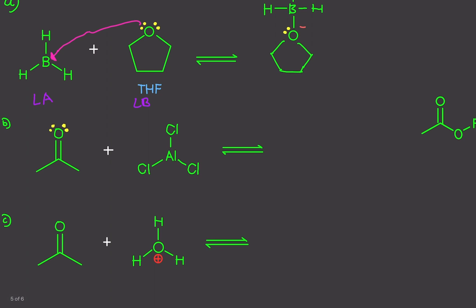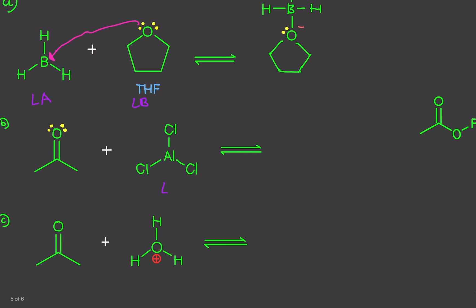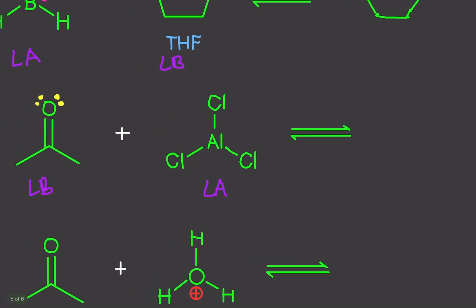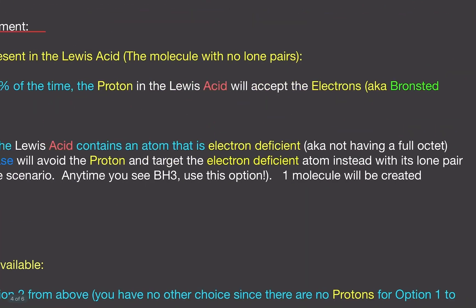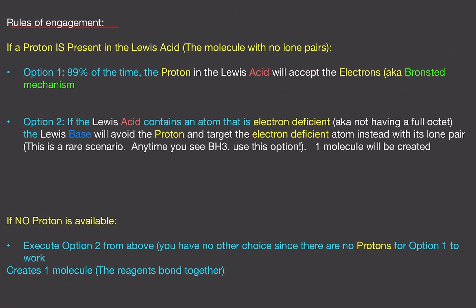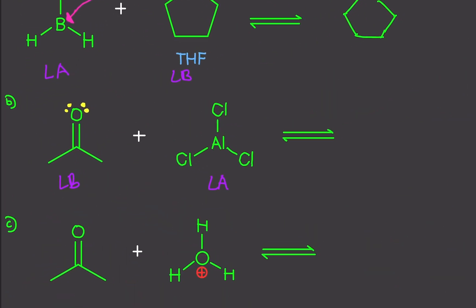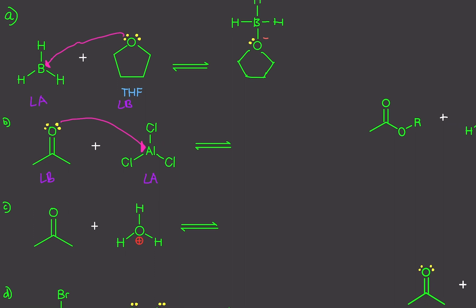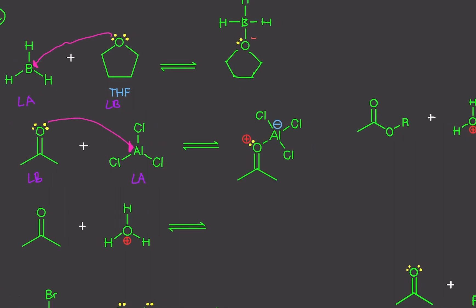Practice problem B: this molecule is the Lewis acid — there are no electrons visible on it. This is the Lewis base because it has the electrons. Since we have no protons on the Lewis acid, we execute the bottom option and create one molecule by merging the two together. We target the electron-deficient molecule, which is usually the center molecule — that's the trick. We attack the center and combine both molecules into one.